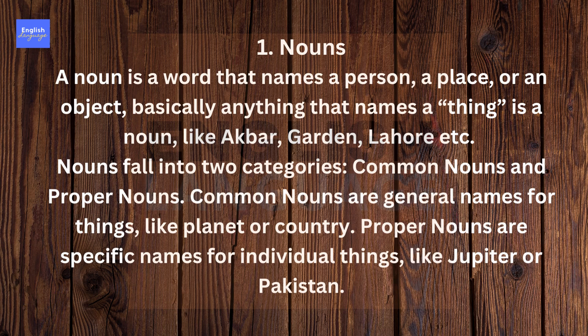Nouns fall into two categories: common nouns and proper nouns. Common nouns are general names for things, like planet or country. Proper nouns are specific names for individual things, like Jupiter or Pakistan.